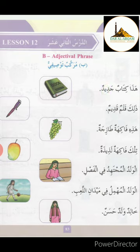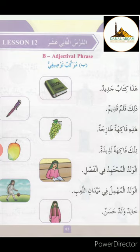Remember: mausuf comes first and then shifat comes. هَاجَا كِتَابٌ جَدِيدٌ — This is a new book.